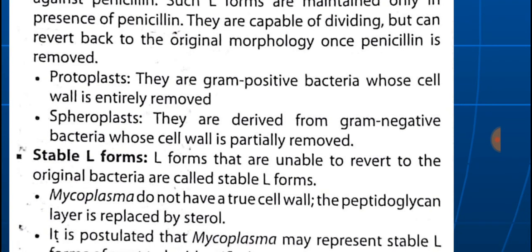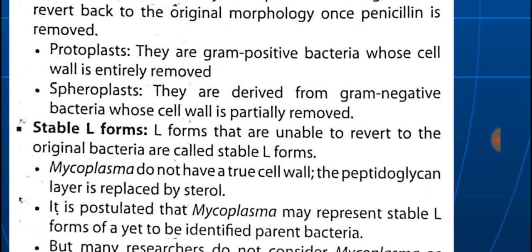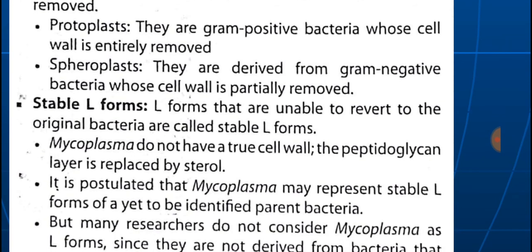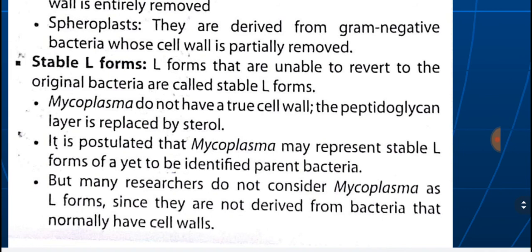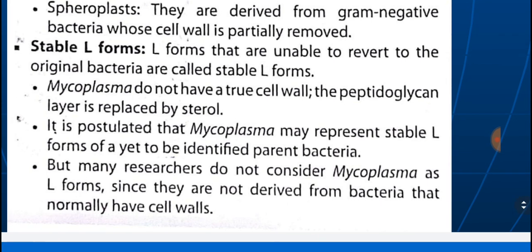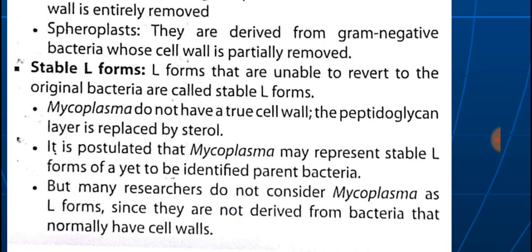Stable L forms are a controversial group — they are unable to revert back to the original bacteria. Mycoplasma does not have a cell wall; the peptidoglycan layer is replaced by sterol. Mycoplasma is the only bacteria with sterol or cholesterol in the cell membrane. Many researchers do not consider mycoplasma as L forms since they are not derived from bacteria that normally have a cell wall. This question has been asked in the PGI Chandigarh exam: 'All the following are L forms except' — mycoplasma is not a typical L form.